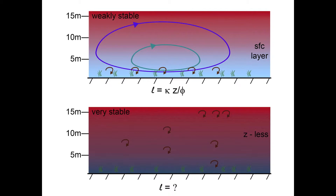Under very stable conditions, the vertical size of the eddies is much smaller and the mixing length, L, is expected to be very small. However, numerical formulation of L for this case is unavailable. The different character of the weakly stable surface layer versus the very stable surface layer has been used to introduce our current level of understanding and modeling capability.